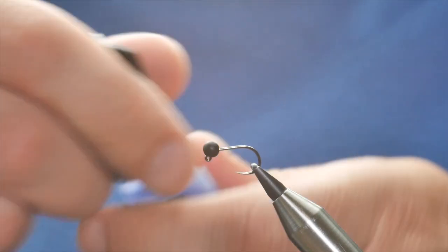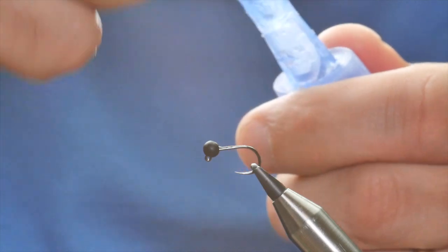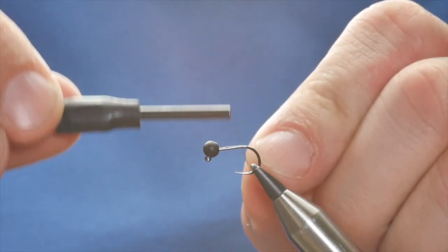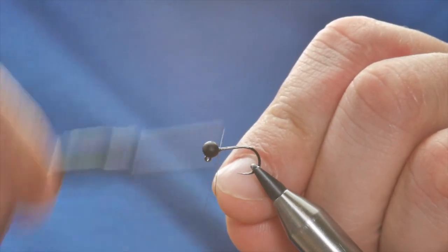As always with these super strong threads, the first thing I'm going to do is add a little bit of super glue to the shank of my hook, and then I can come in and just lock that into place.